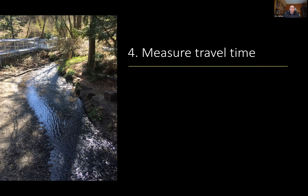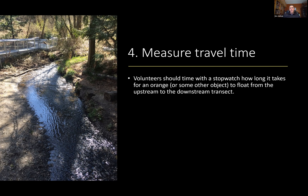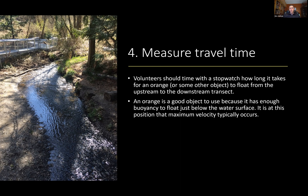Next, measure travel time. Use a stopwatch and time how long it takes for the float to travel from the upstream to the downstream transect. An orange is a good object because it floats just below the water surface, so it's not susceptible to wind like a lightweight object such as a ping pong ball would be. Oranges are also biodegradable, so if you accidentally lose it you're not leaving behind litter.